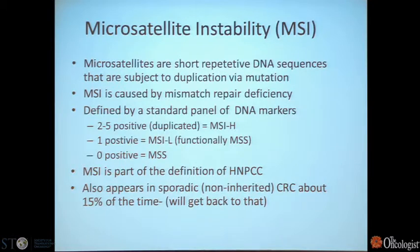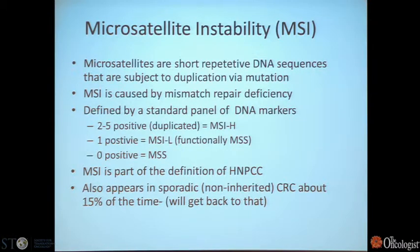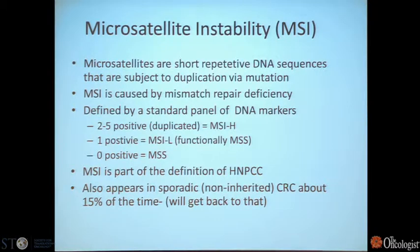Microsatellite instability confuses people. It is caused by mismatch repair deficiency, but microsatellites are not really part of our coding genome. They are short repetitive DNA sequences subject to duplication via mutation and are very sensitive to mismatch repair deficiency. When testing a patient using a panel of DNA markers, if two to five are positive, the patient is MSI high; one positive is MSI low; zero positive is microsatellite stable. For all intents, MSI low and microsatellite stable behave the same — MSI low patients don't act like MSI high patients.